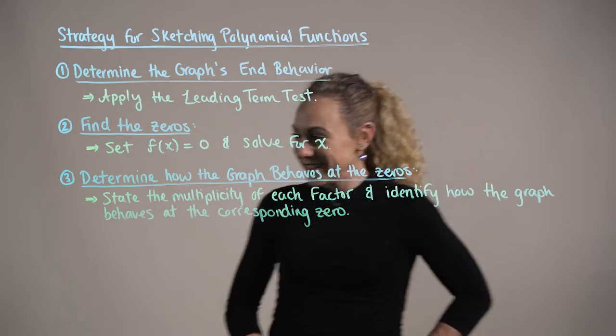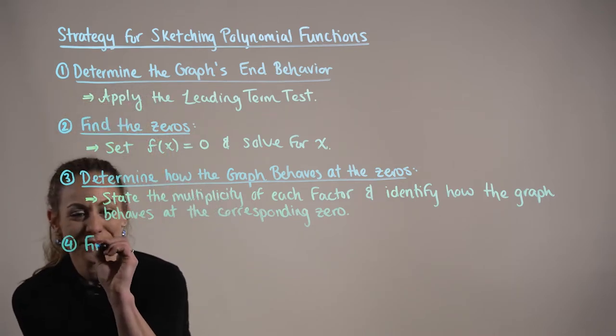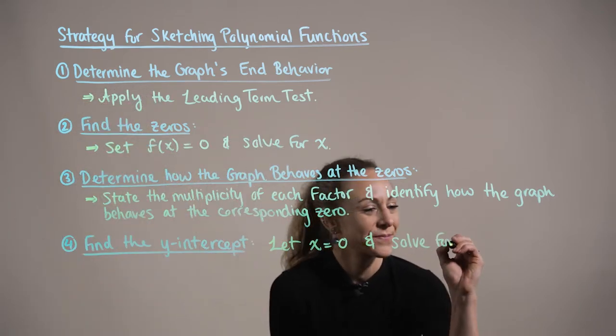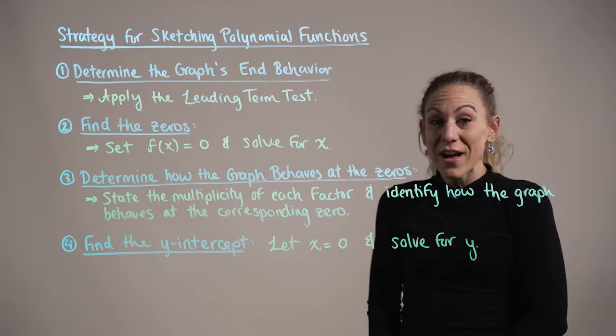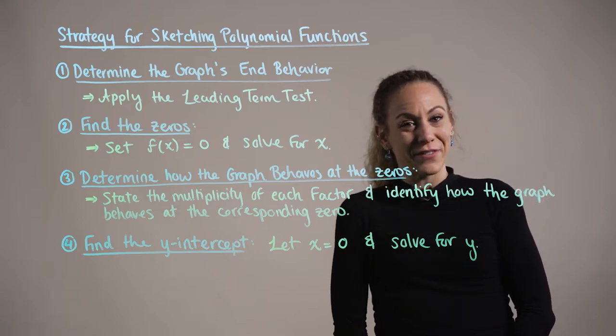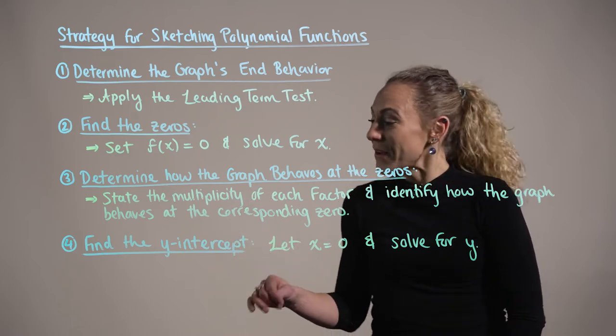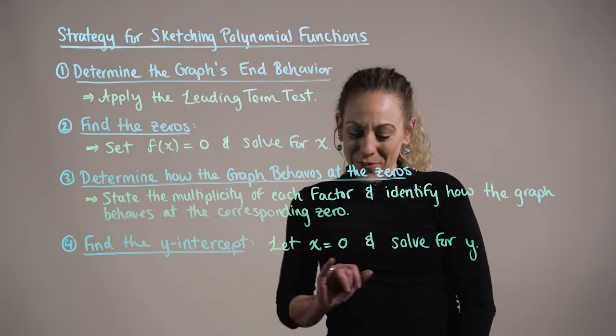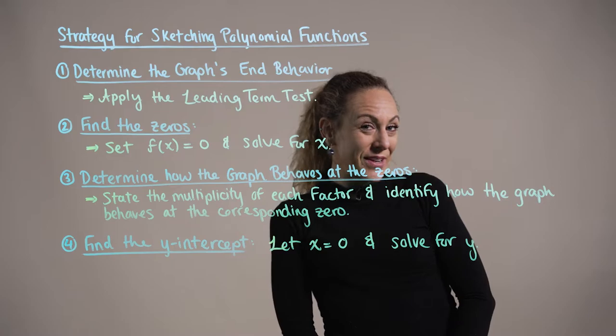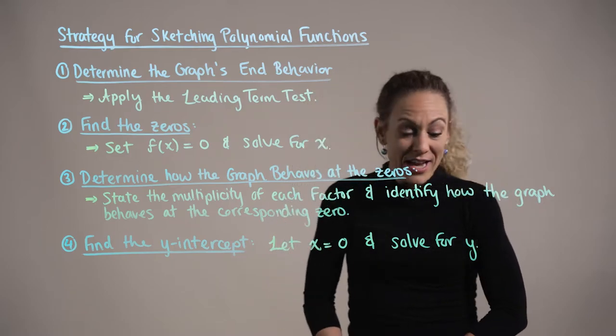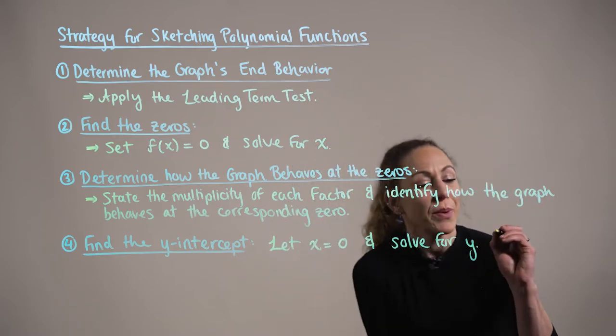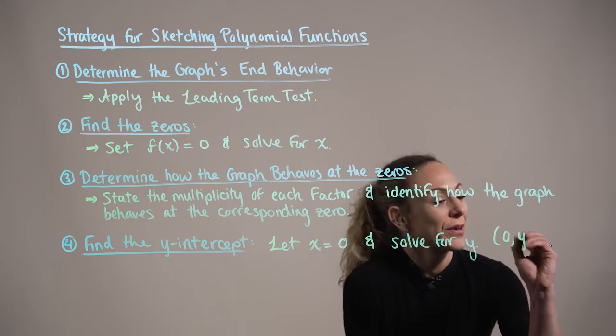Step four. In step four, we find the y-intercept of the graph. To find the y-intercept of any graph or for any function, we let x equal zero and then solve for y. Keep in mind, we can write this in its ordered pair form, (0, y).